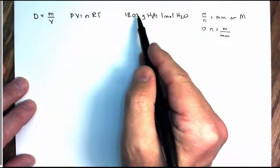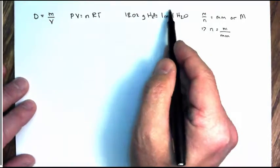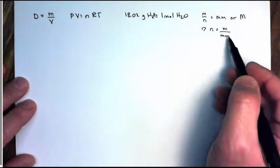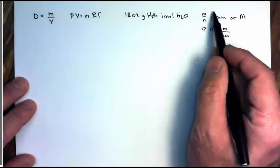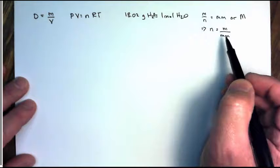So this is molar mass, which we write as mass over moles in a fraction, and that's what molar mass is. So moles equals mass over molar mass, just rearranging this equation.